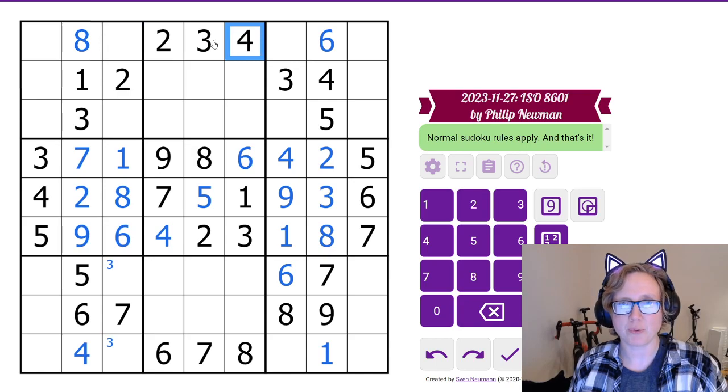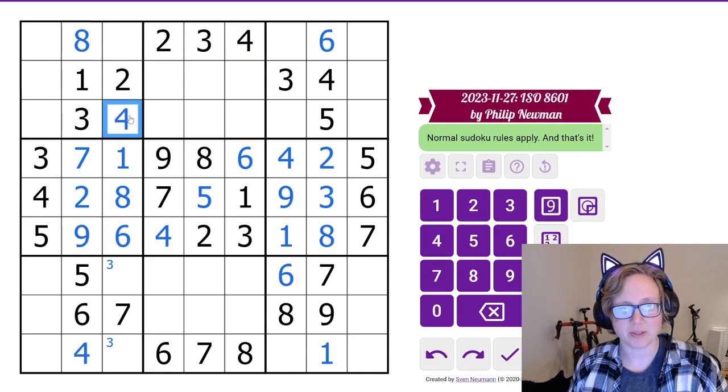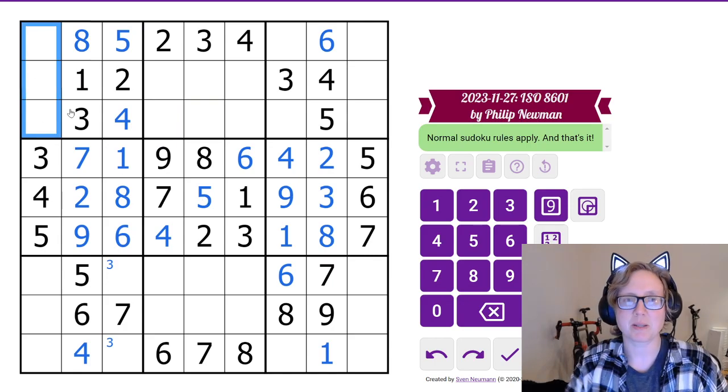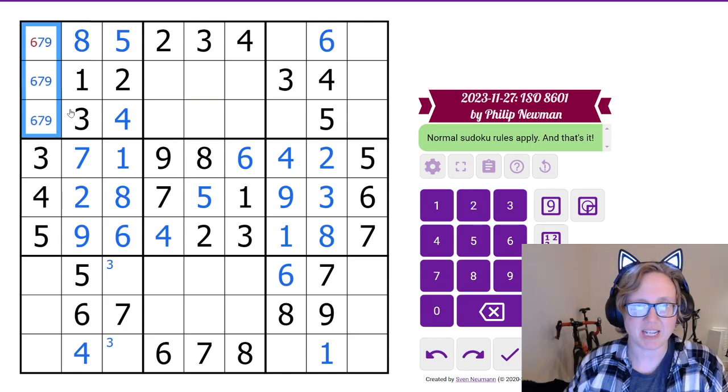The 4, because of this 4 in row 1, can't go in this cell, so it's here, and then there's our 5. And so the remaining 3 cells we can pencil mark in, those are 6, 7, and 9.